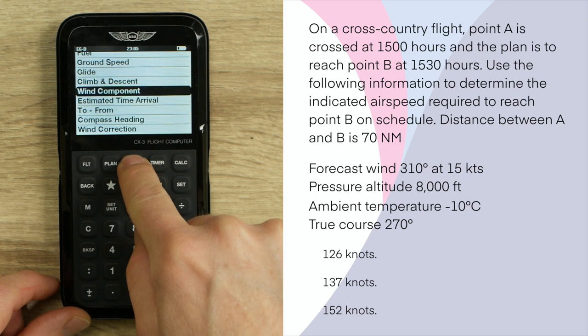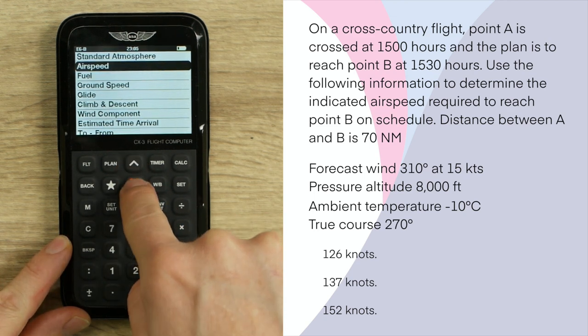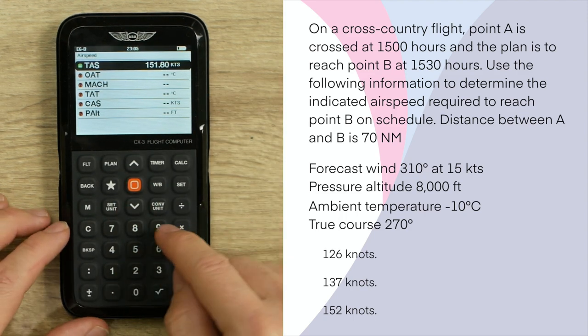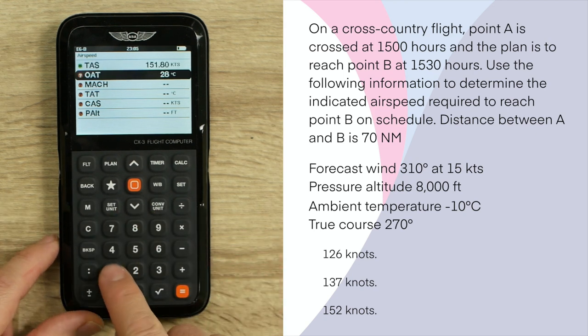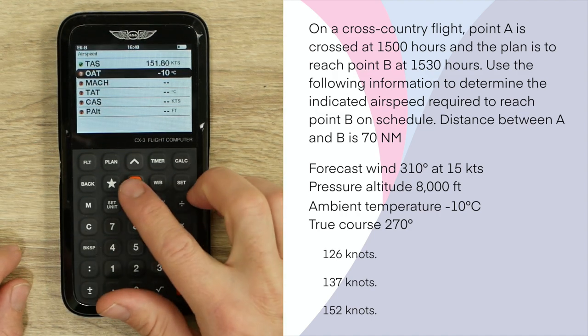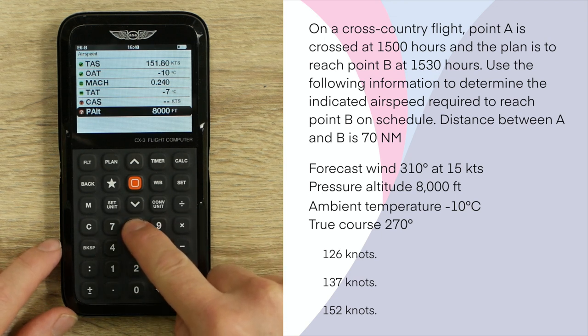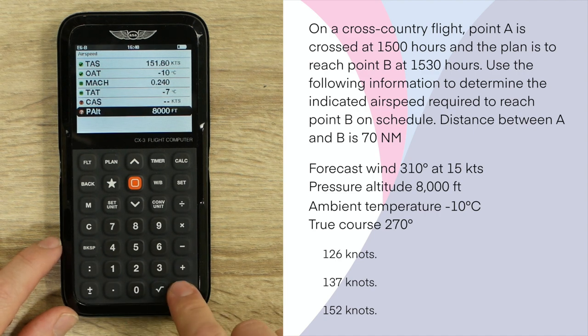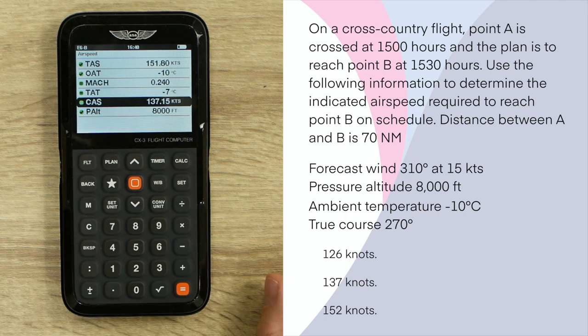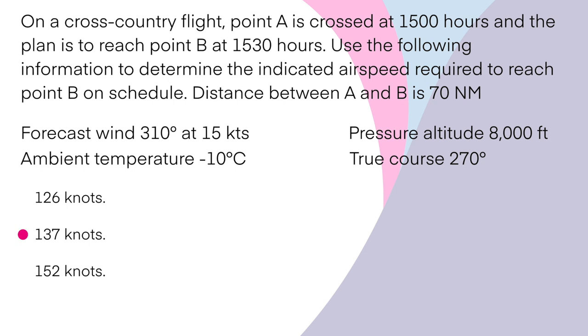Step three — convert true airspeed to calibrated airspeed. Go to the Airspeed window in FLT mode. The CX-3 carries over the true airspeed of 151.8 knots. Enter outside air temperature: negative 10°C. Enter pressure altitude: 8,000 feet. Press equal — our calibrated airspeed is 137 knots. Looking at the answers — 137 is right there. The key is doing it in order: ground speed → true airspeed → calibrated/indicated airspeed, through three separate windows.